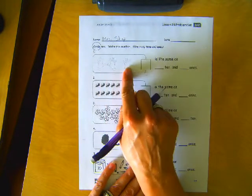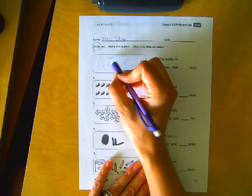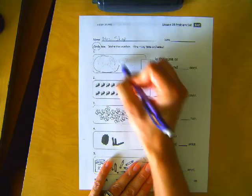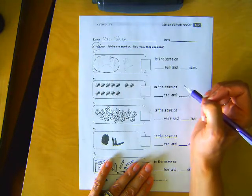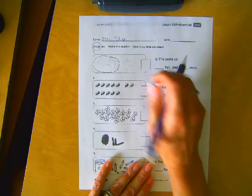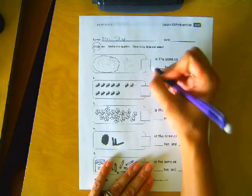So we have fingers here. We need to circle ten. So there's a ten. And then we have five extra fingers, so how many does that make? That makes fifteen.